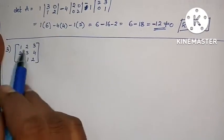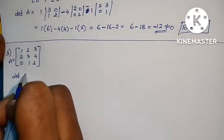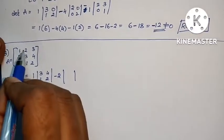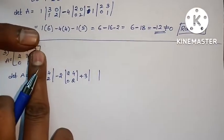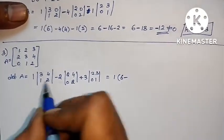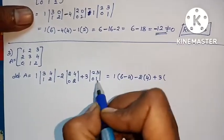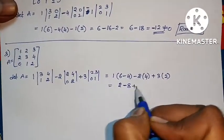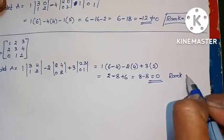Next problem — let A equals the given matrix. det(A) = 1 into det of [3, 4; 1, 2], minus 2 into det of [2, 4; 0, 2], plus 3 into det of [2, 3; 0, 1]. Computing: 1 into (3×2 - 4×1) = 6 - 4 = 2. Minus 2 into (2×2 - 0×4) = 4, so minus 2×4 = -8. Plus 3 into (2×1 - 0×3) = 2, so plus 3×2 = 6. Total: 2 - 8 + 6 = 0. The determinant equals 0, so rank is not equal to 3.